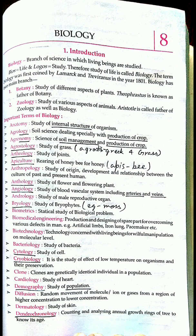Bryology is the study of bryophytes. You know what bryophytes are — the moss growing at the side of the road in the rainy season, that green thing is moss, and they are bryophytes. The study of bryophytes is called bryology. Biometrics you know is related to Aadhaar card. Bacteriology is the study of bacteria. Cytology — C-Y-T-O-L-O-G-Y — is the study of the cell, which is very important.